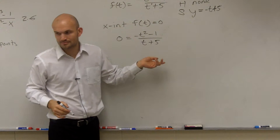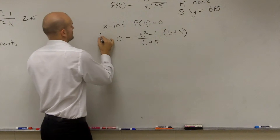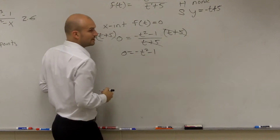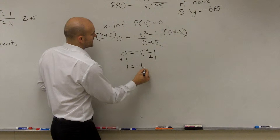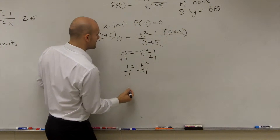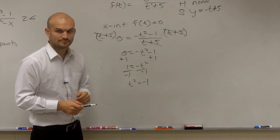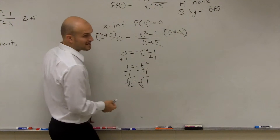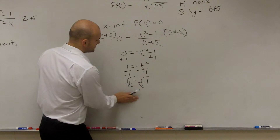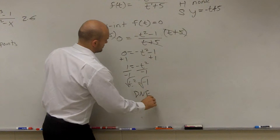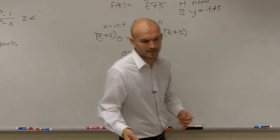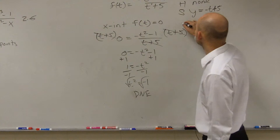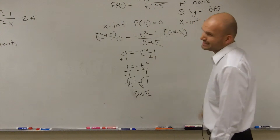0 equals negative t squared minus 1. Add 1 to both sides: 1 equals negative t squared. Divide by negative 1: t squared equals negative 1. Take the square root — can you take the square root of a negative number? No. That's an imaginary root, so in the real number system it does not exist. Therefore, we have no real x intercepts for this problem.